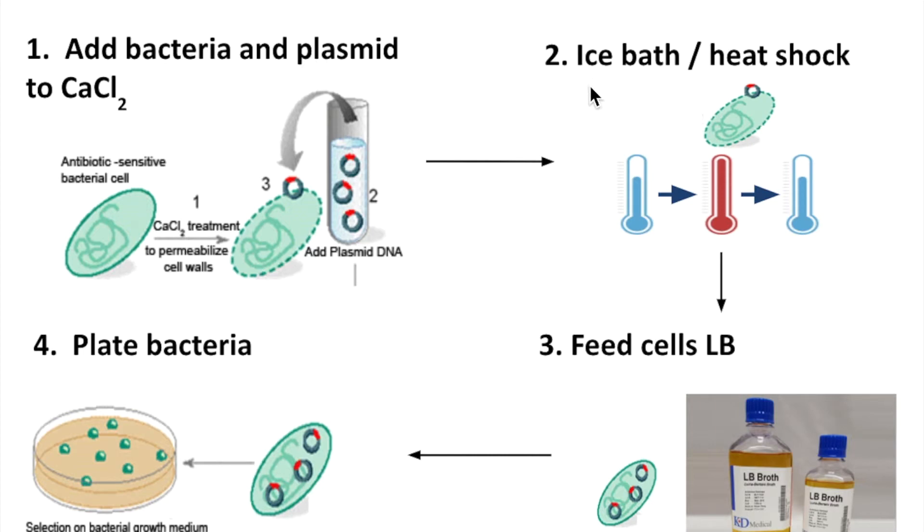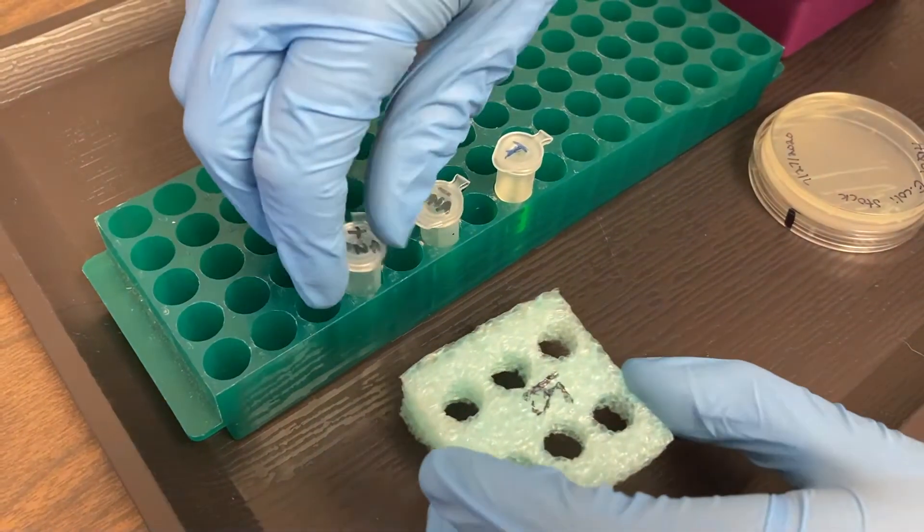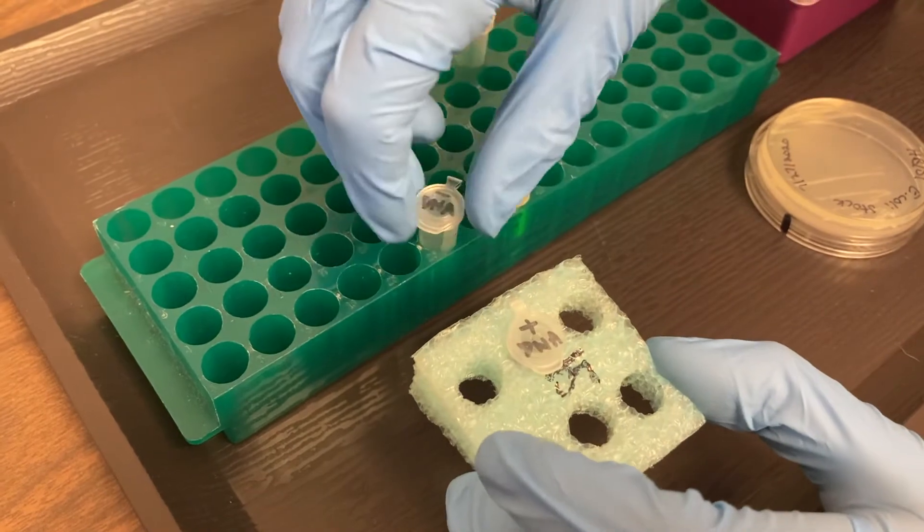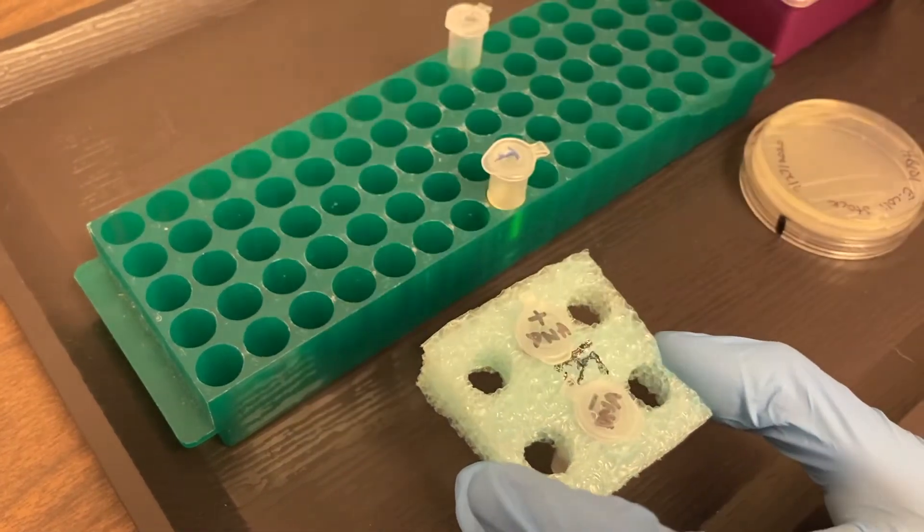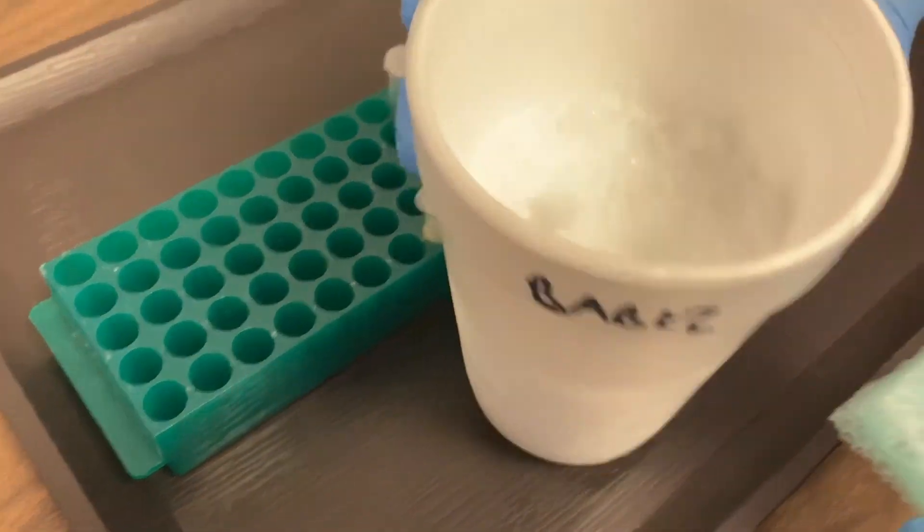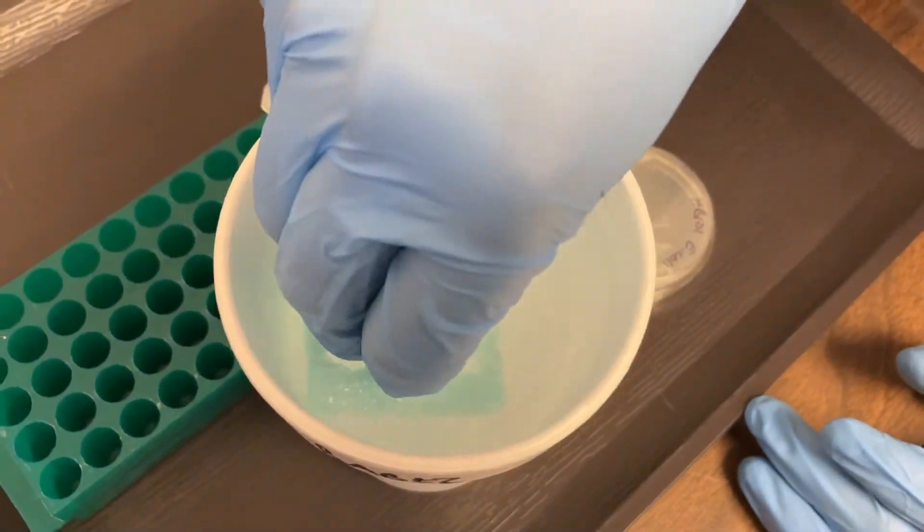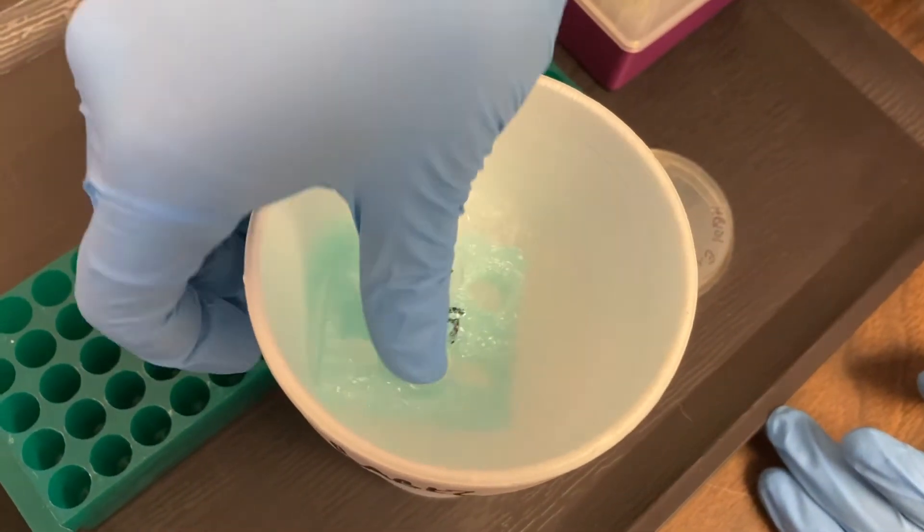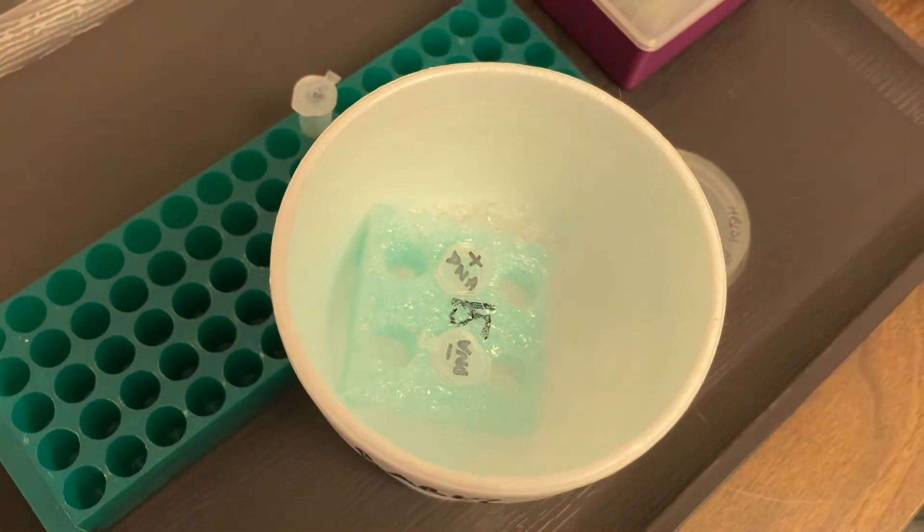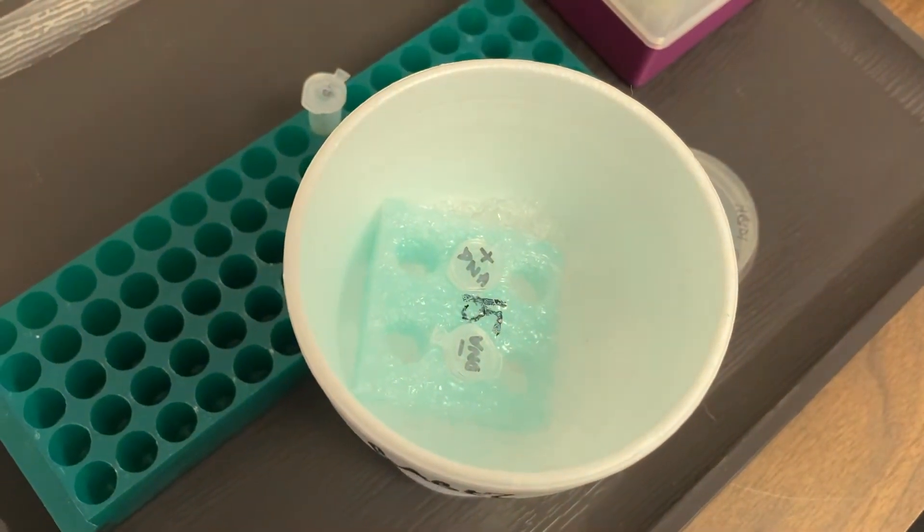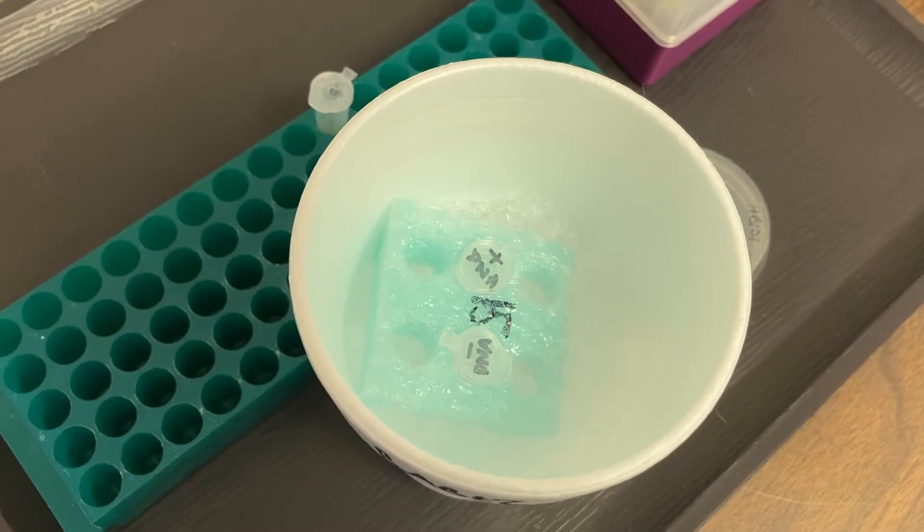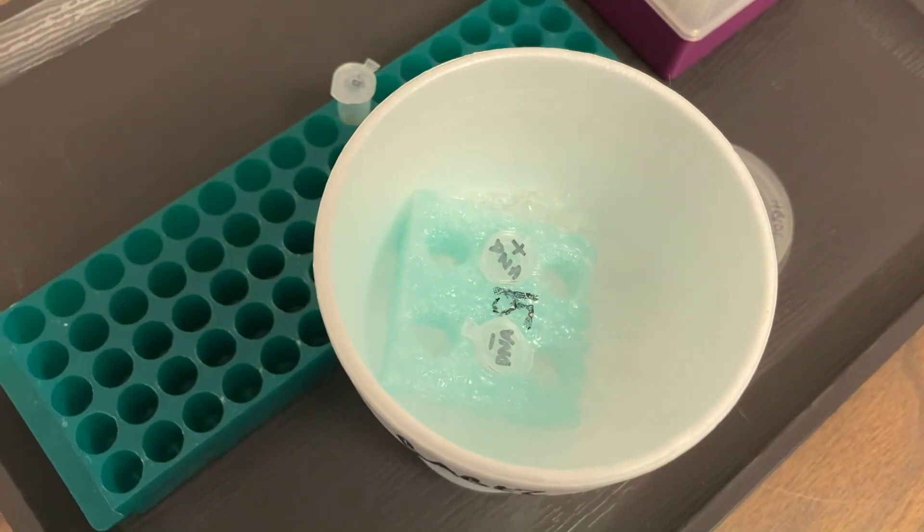Now we're going to move on to part two, which is the ice bath and then the heat shock. We're going to take both of our tubes and use a styrofoam floaty to put them in our ice bath. That's crushed ice which works fine. You can use ice cubes with a little bit of water to create a water bath as well. It's important that both tubes are deep down into the ice for this incubation. We're going to leave them on ice for 10 minutes.